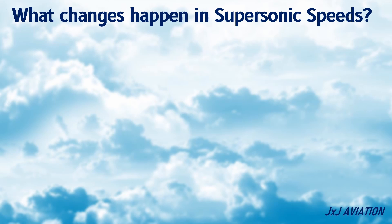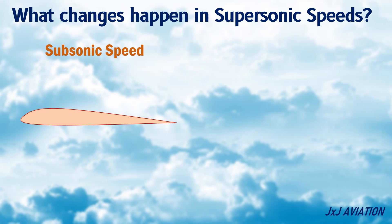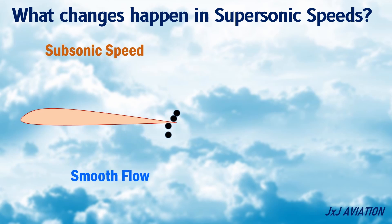What changes happen at supersonic speeds? To understand this, let's consider an airfoil flying at subsonic speed. The air particles in front of the leading edge of the airfoil adjust according to the shape of the airfoil, and hence the flow is smooth around the airfoil.